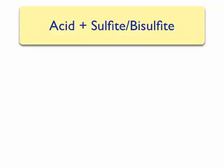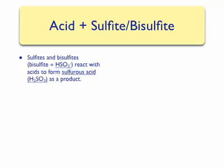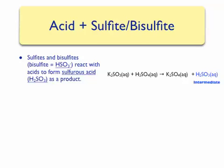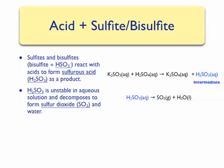The last type of gas evolution reaction results from the combination of an acid and a sulfite or bisulfite ion. The sulfite ion is SO₃²⁻ and bisulfite is HSO₃⁻. When either of these reacts with an acid, they form sulfurous acid as a product. For example, when potassium sulfite and sulfuric acid are reacted, a double displacement results in the formation of potassium sulfate and sulfurous acid. Like carbonic acid, sulfurous acid is unstable in aqueous solution and will decompose to form sulfur dioxide gas and liquid water.